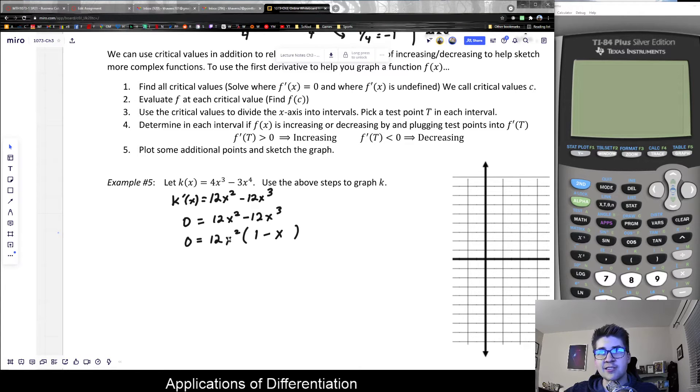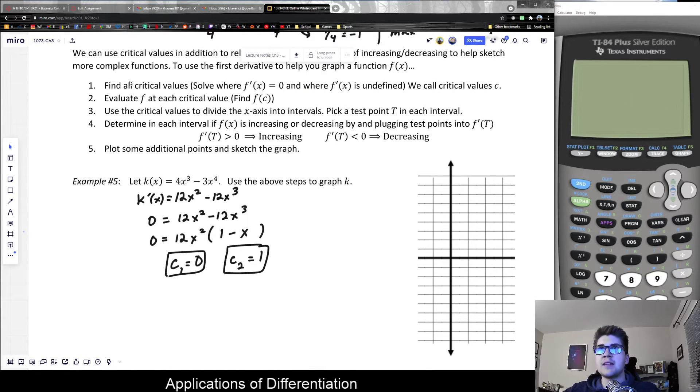Our first critical value would occur at zero because 12 times zero would be zero. And what would make this one zero is positive one. So this would be our second critical value at positive one, the zeros of each of those two factors. This curve has two unique critical values at zero and one.